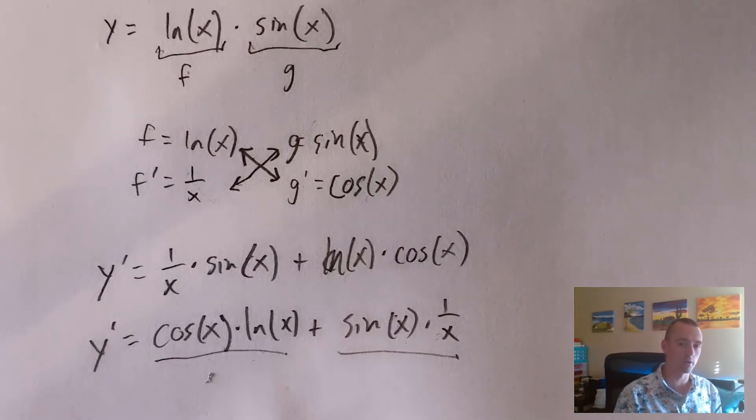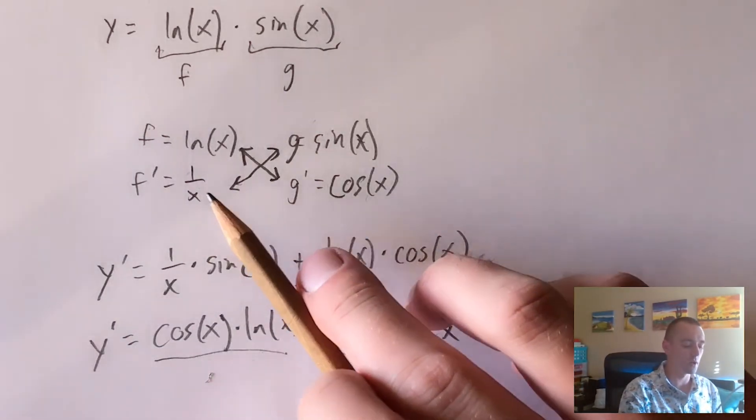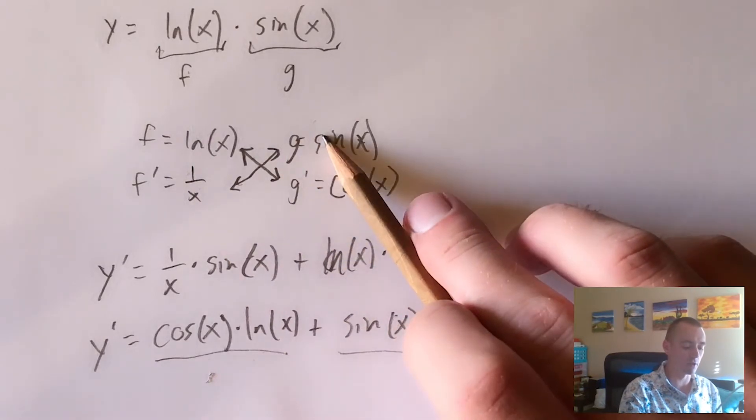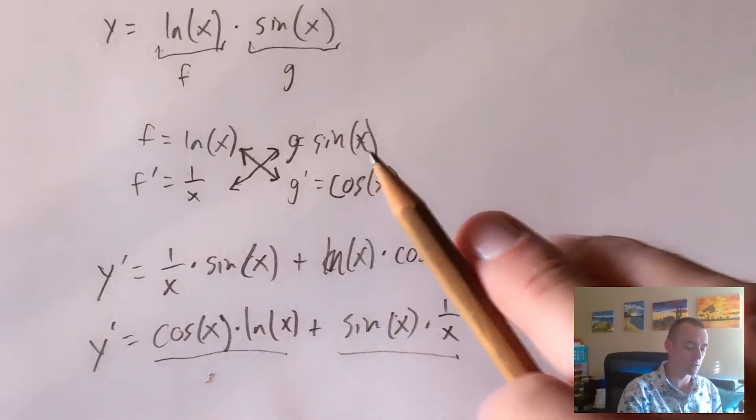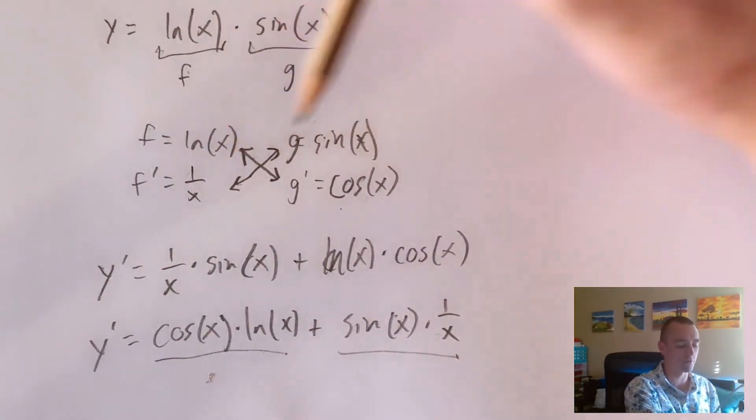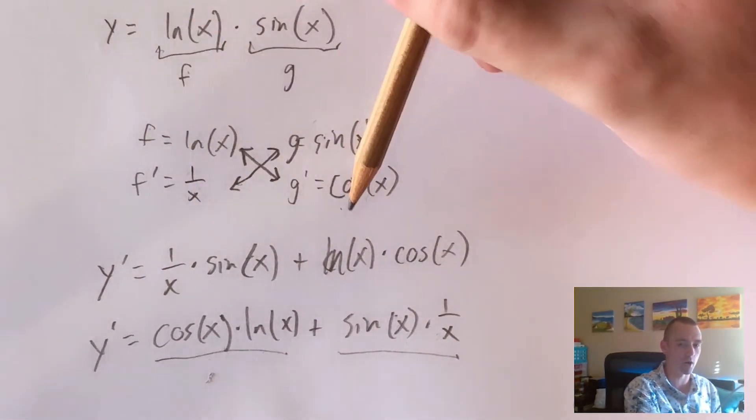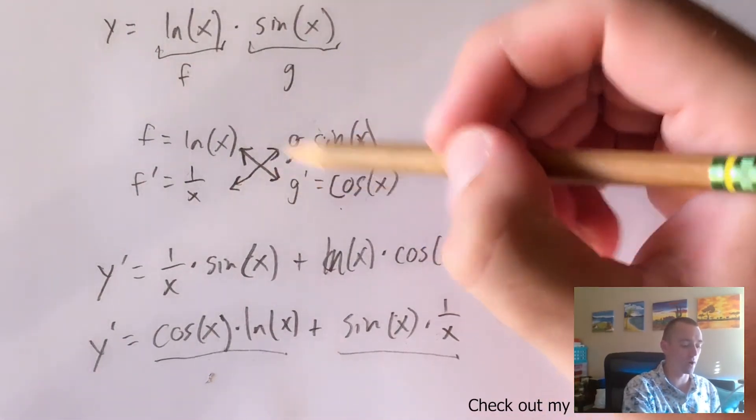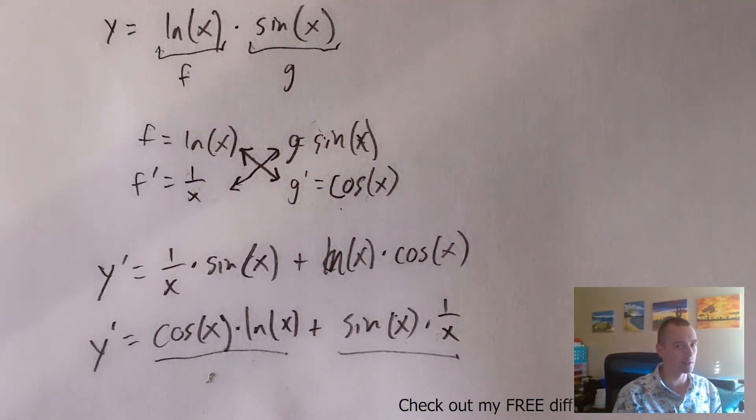However, it is very important that you make sure that you're doing the derivative of f times the original of g and the derivative of g times the original of f. It's not going to work if you do f times g or f prime times g prime or g times g prime or f times f prime. That's not going to work.